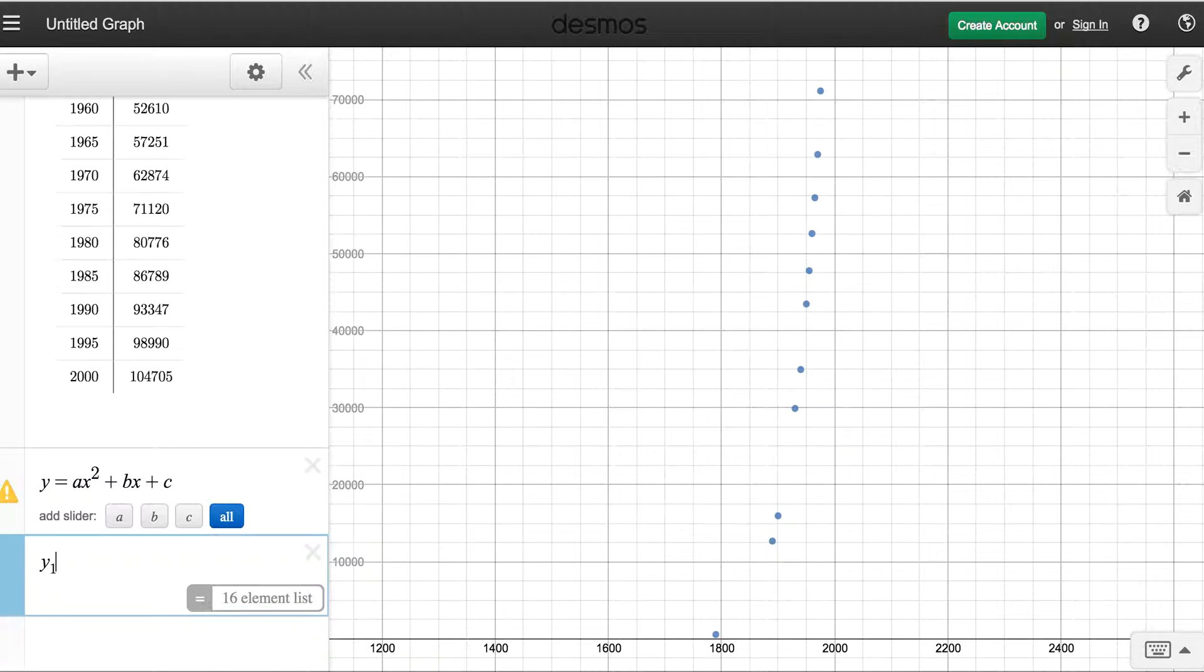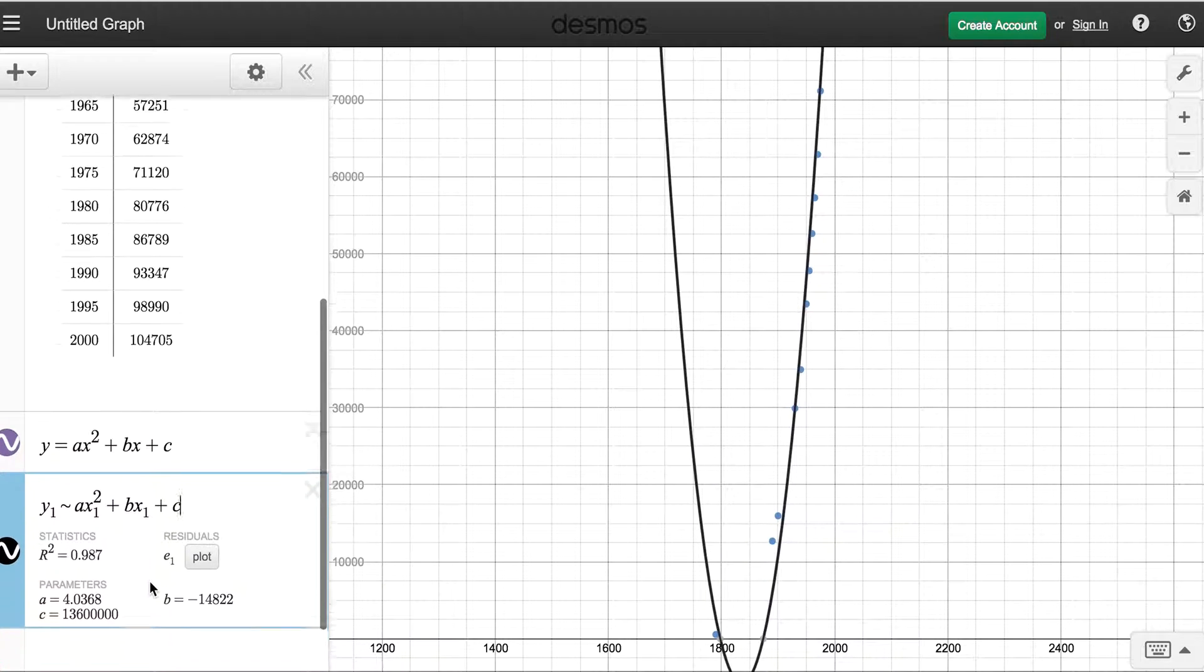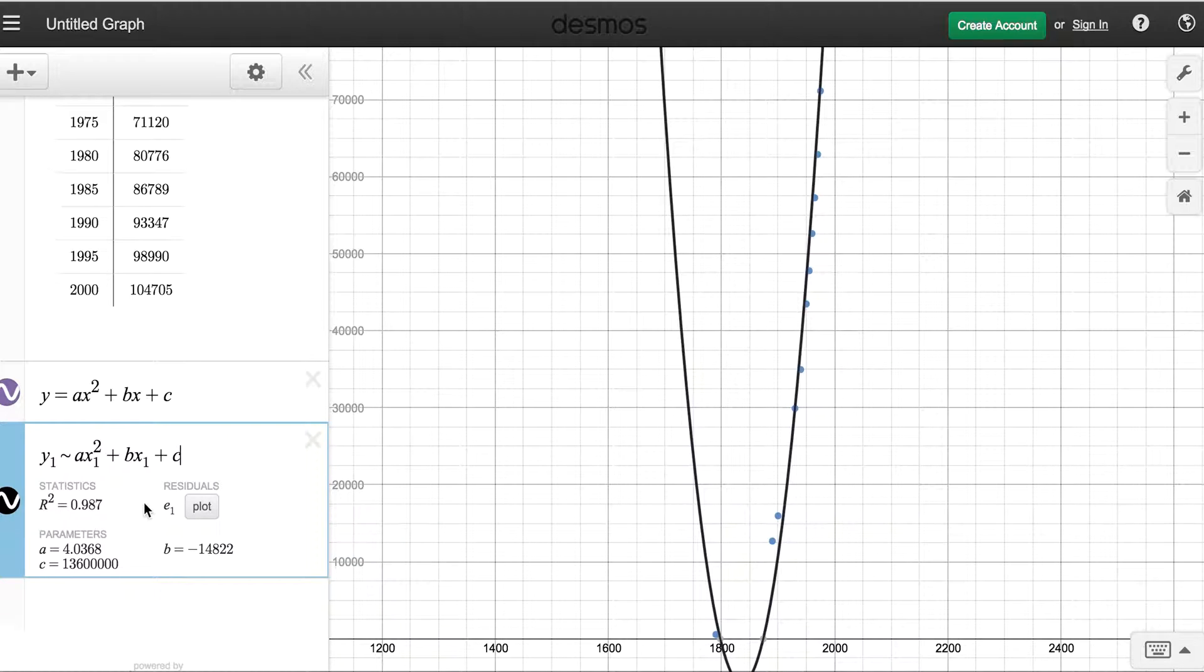So we have y1 approximately ax1 squared. You'll see it starts generating equations based on whatever it is you put in there. But since I want the exact parent, I'm going to go ahead and put that in. Did you see what I did just there? I forgot to put my subscript 1, and that messed me up. All right, so here we have it, and that r value is much, much better at 0.987. We're getting very close to fitting our data.